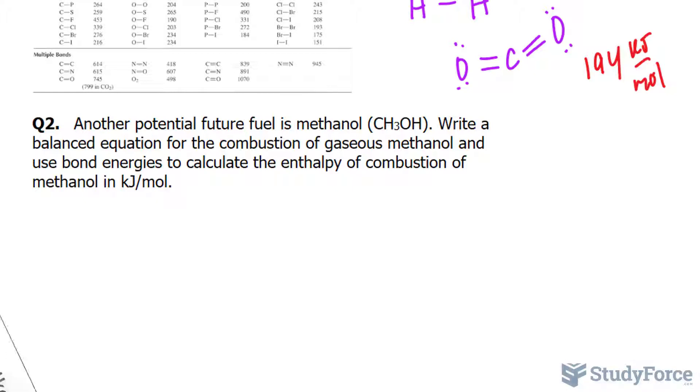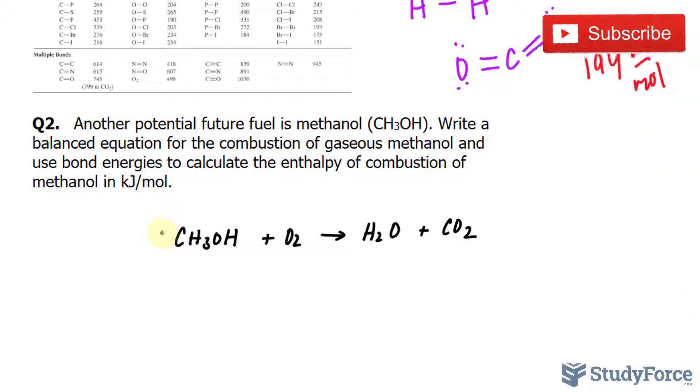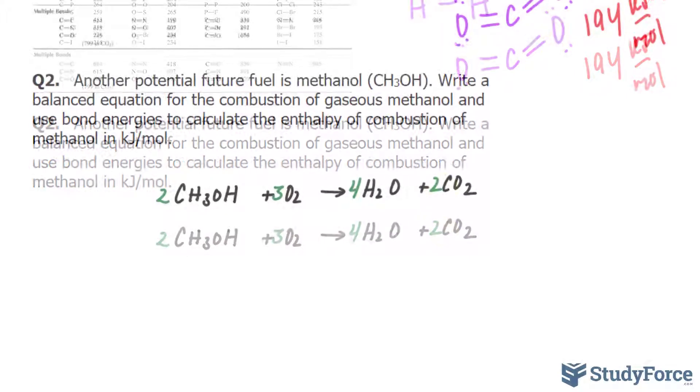The first thing that I want to do is write a balanced chemical equation for this reaction. So it's a combustion reaction. This fuel, CH3OH, will react with oxygen, and that will form water and carbon dioxide. If you balance this correctly, you should end up with the following balanced chemical equation: 2, 3, 4, and 2.